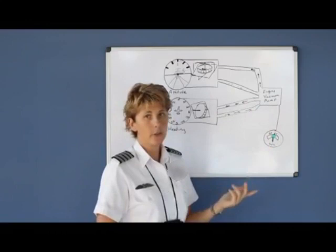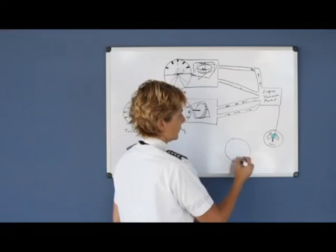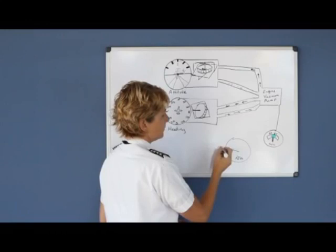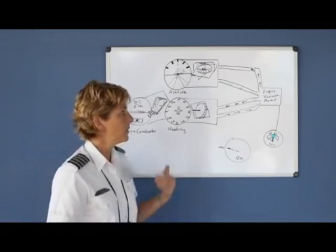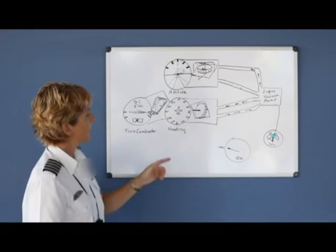Now, because this is indicating from our engine driven vacuum pump, if we have a very low RPMs, for example, when you're taxiing, let's say you're taxiing and you have your RPMs set at maybe 1,000, it's likely that the suction gauge would read very low because you're not working your engine. So therefore, the vacuum pump's not working much either.